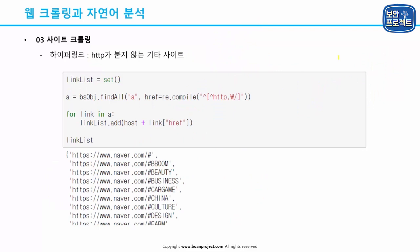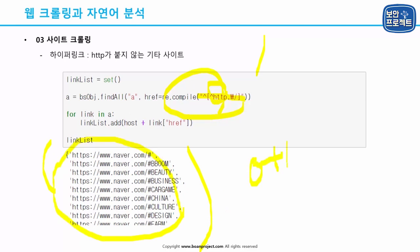다음은 HTTP로 시작하지 않는 사이트들입니다. HTTP로도 시작하지 않고 슬래시로도 시작하지 않는, 앞의 두 가지 조건에 해당하지 않는 링크들을 검색했습니다. 검색해보면 이 other 사이트들은 같은 사이트군이 아니니까 크롤링 대상에서 제외하면 되고요. 결과를 보면 거의 대부분 해시태그 관련된 것들이 나옵니다.